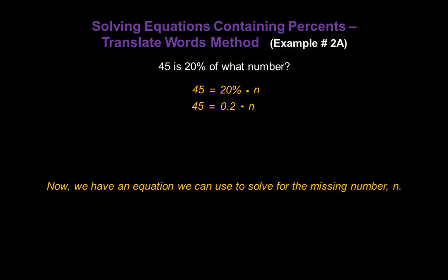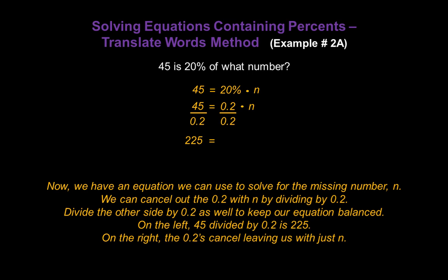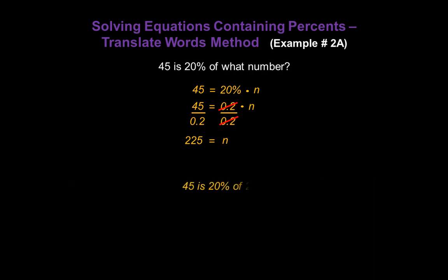Now we have an equation we can use to solve for the missing number n. We can cancel out the 0.2 with n by dividing it by 0.2, and of course we have to divide the other side by 0.2 as well to keep our equation balanced. On the left, 45 divided by 0.2 is 225. And on the right, the 0.2s cancel, leaving us with just our variable n. So 45 is 20 percent of 225.